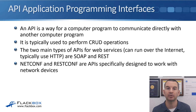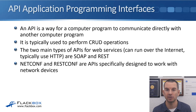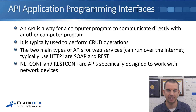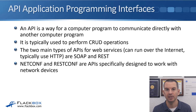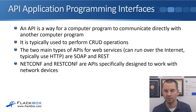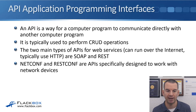APIs are typically used to perform CRUD operations. CRUD stands for Create, Read, Update, and Delete — I'll talk about that more on the next slide. The two main types of APIs for web services, meaning they can run over the internet and typically use HTTP or HTTPS, are SOAP and REST.